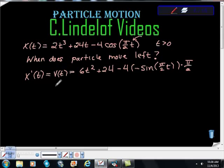So when I clean this up, I'm going to get my velocity function. This is just me cleaning up my algebra or trig. 6t² + 24, negative times a negative is a positive, 4 times π/2 is 2π. So, + 2πsin(πt/2). Wow, what a mess, right? So there's our derivative.